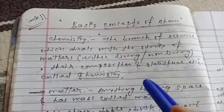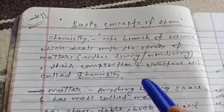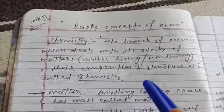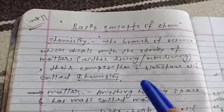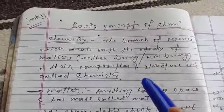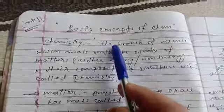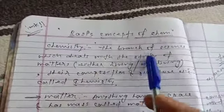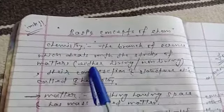Students, today we are going to learn the first chapter, basic concepts of chemistry. First of all, you should know what is chemistry. The branch of science which deals with the study of matter, either living or non-living, their composition and structure, is called chemistry.